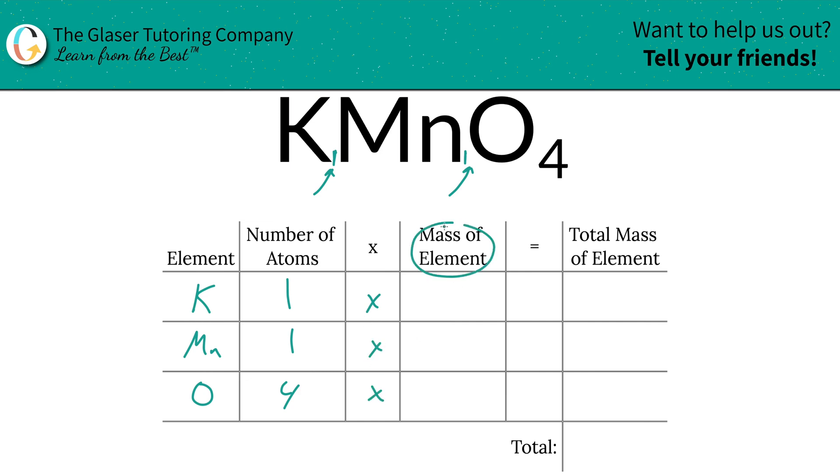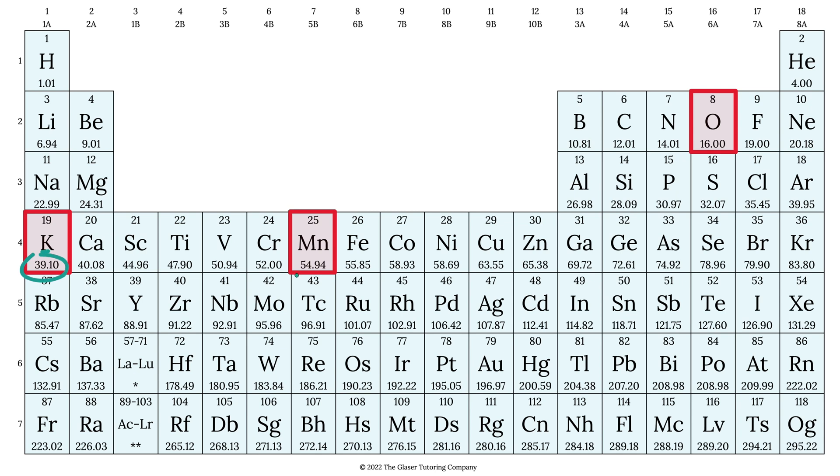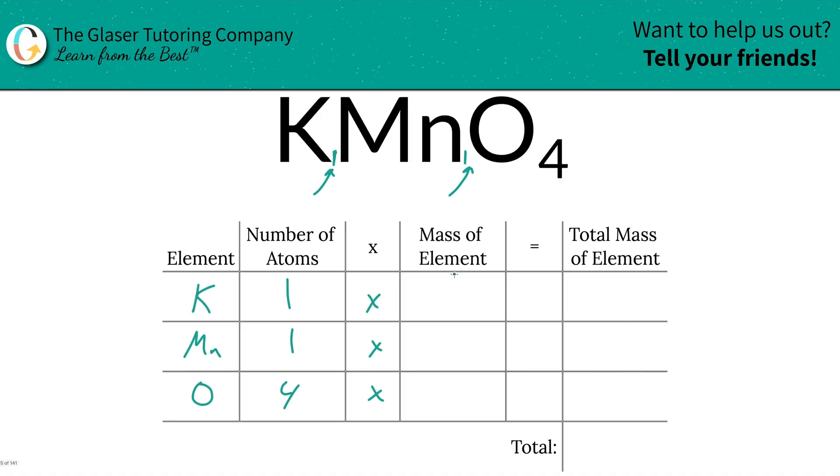Then we're simply going to take those number of atoms and multiply it by the mass of the element, and that's where the periodic table comes into play. So potassium's mass is going to be 39.10, manganese is 54.94, and oxygen is going to be 16.